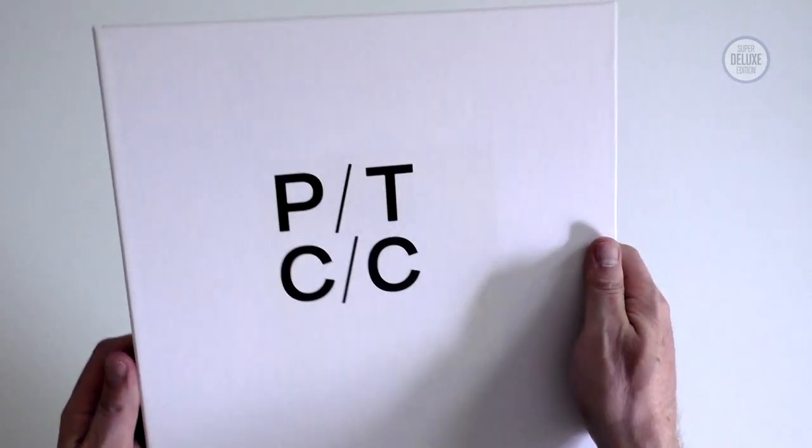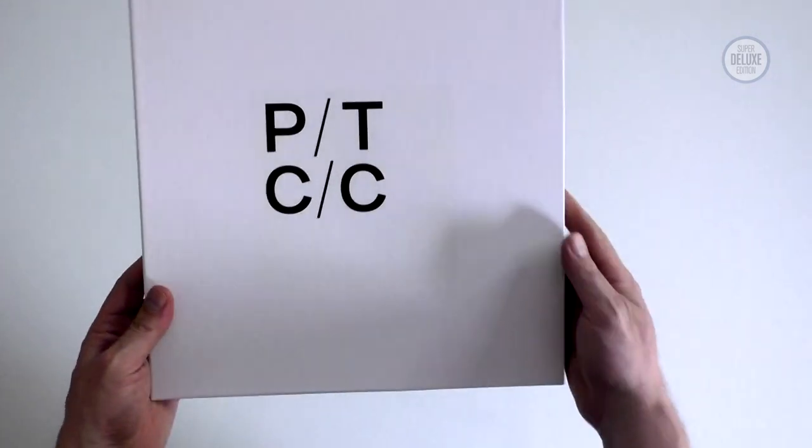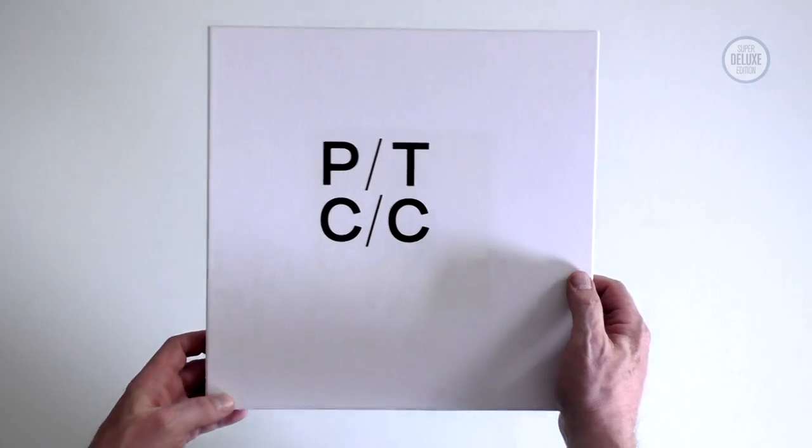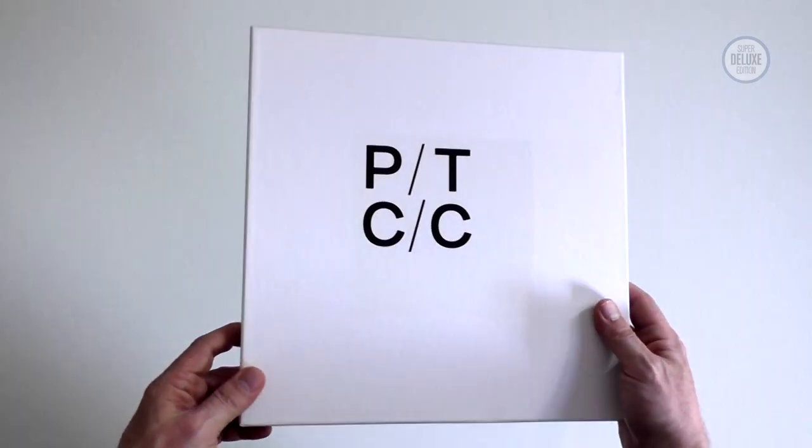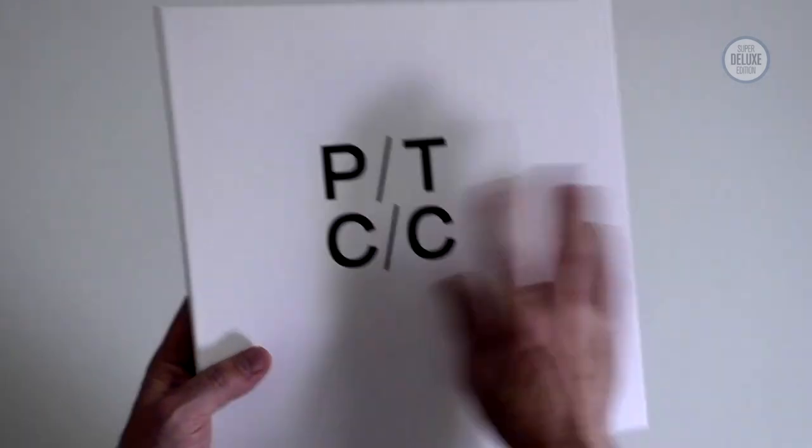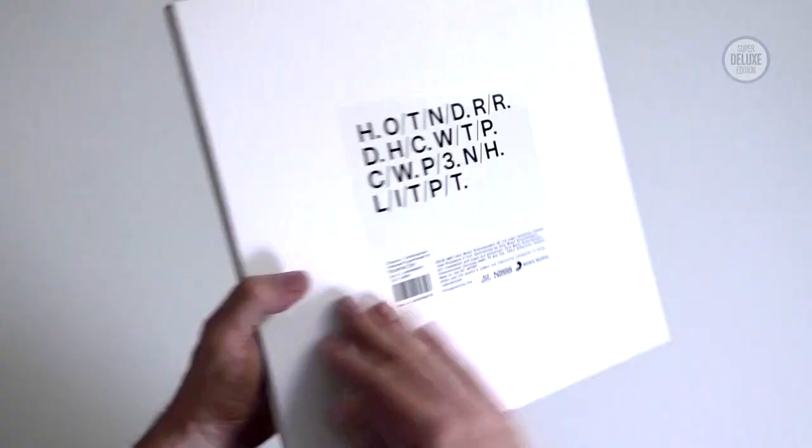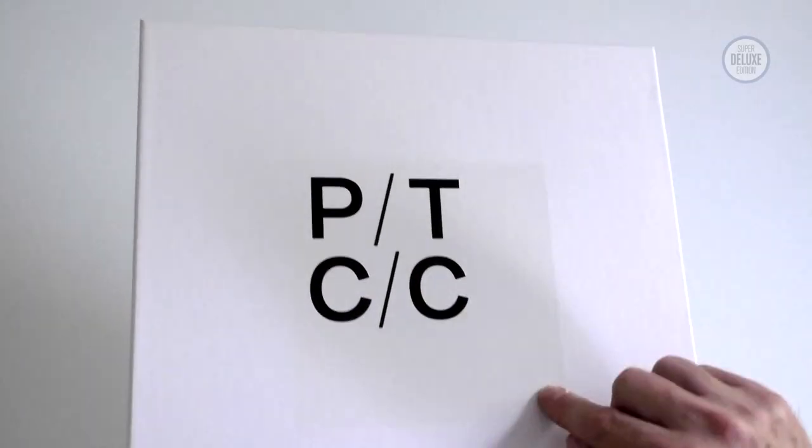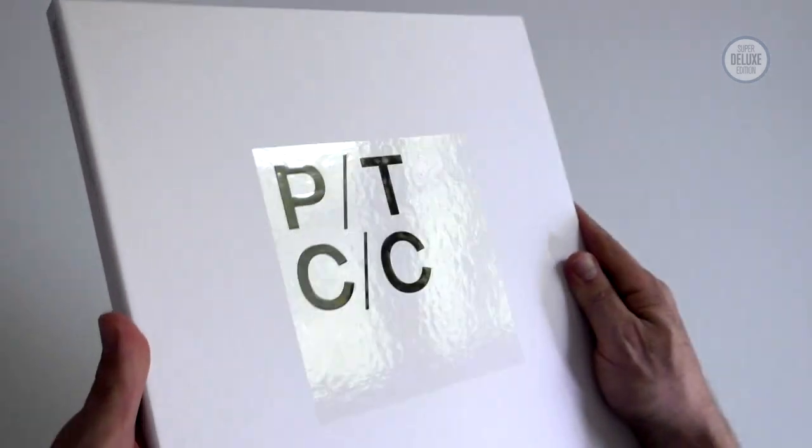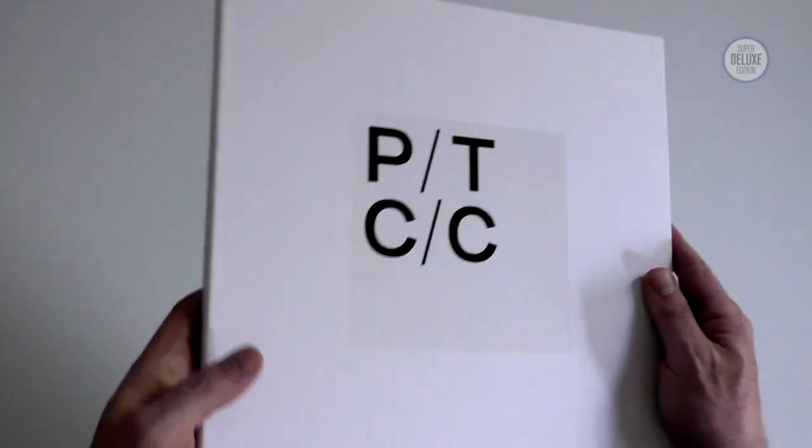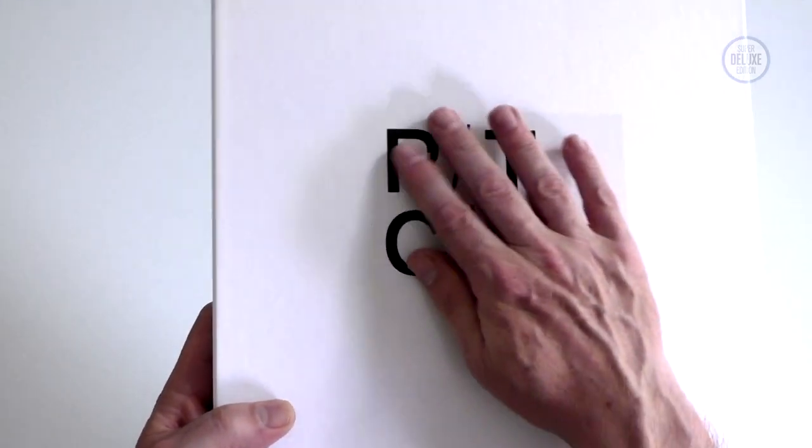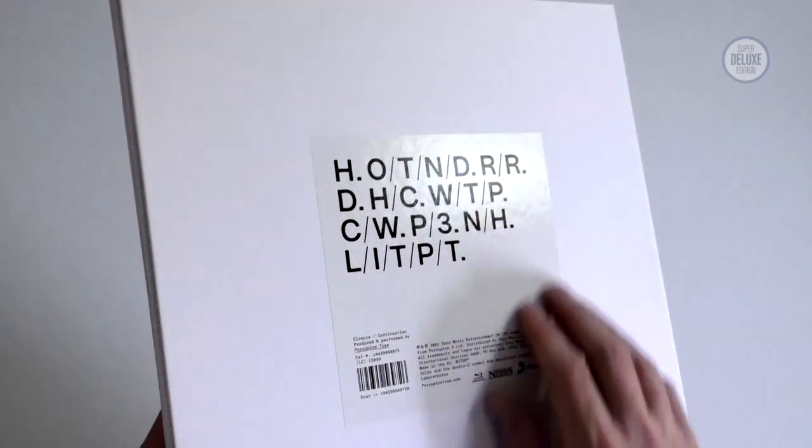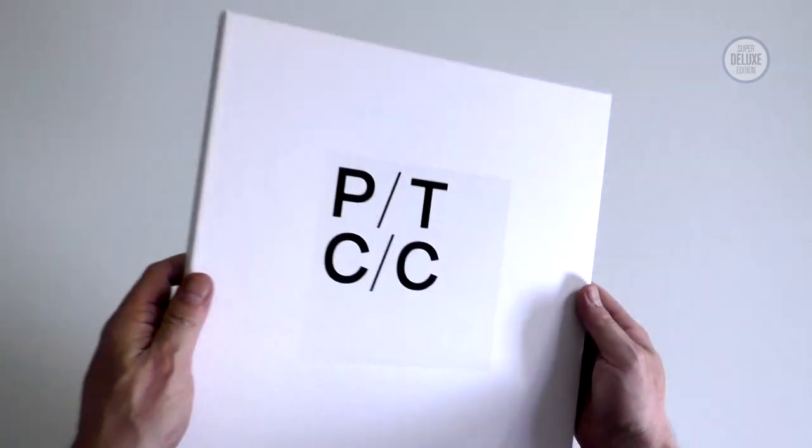What we're looking at here is probably what most of you will be most interested in, which is the 2 CD and Blu-ray Deluxe Edition of Closure Continuation. Obviously it's a large format package. Some nice attention to detail with this spot varnishing in a square shape, which is a theme that we'll see across all the formats. There's actually a little bit of embossing going on here, and same on the back. So let's open this up and take a look at the packaging.